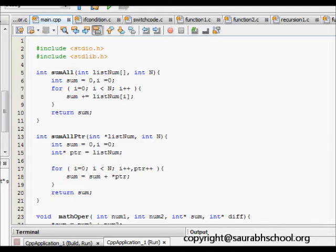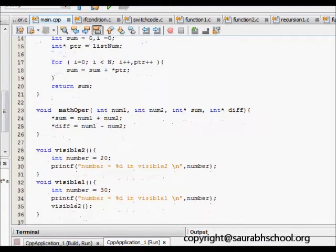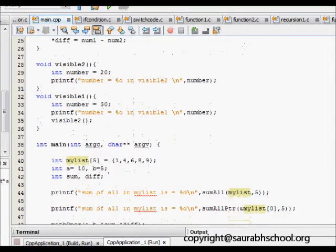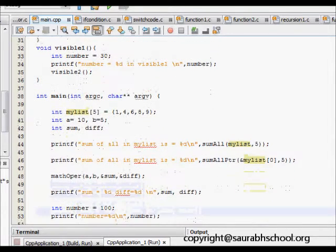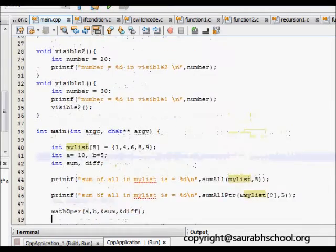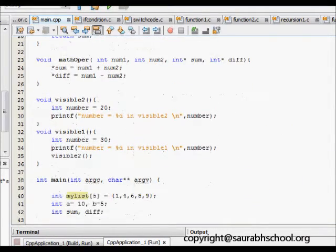The second thing we learn is how to return more than one variable from a function, which is pass by reference and pass by value. Then we see some of the scopes of variables. We learn these three things. Let's try to see what the function does.